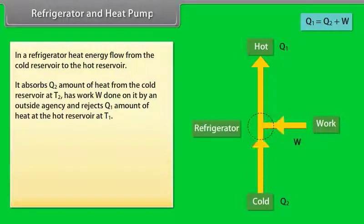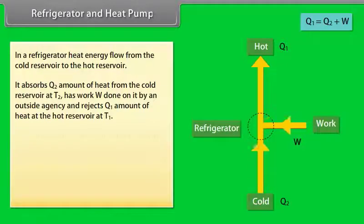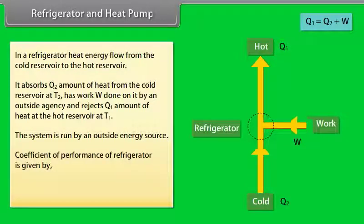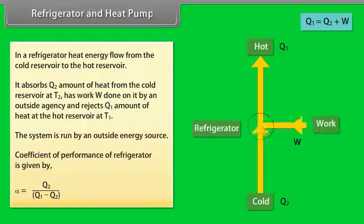A refrigerator is run by an outside energy source; it extracts Q₂ from the cold reservoir and rejects Q₁ at the hot reservoir at temperature T₁. The coefficient of performance of a refrigerator is given by: α = Q₂ / (Q₁ − Q₂).